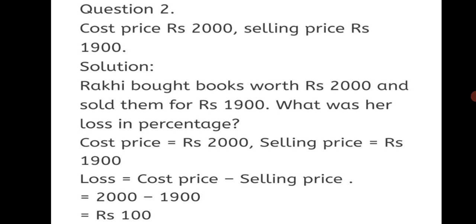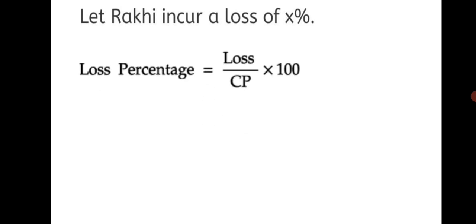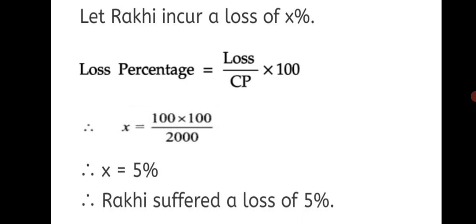Loss = Rs.2000 minus Rs.1900 = Rs.100. Now we will assume the loss percentage to be X%. Loss percentage formula: Loss percentage = Loss upon CP into 100. X = 100 upon 2000 into 100. Reducing the zeros, you get 10 upon 2 = 5. Therefore X = 5%. Final answer: Rakhi suffered a loss of 5%. You have to frame the word problem using a name and statement, then solve to find loss or profit and its percentage.